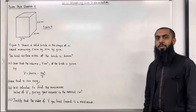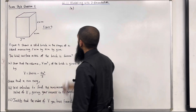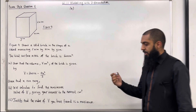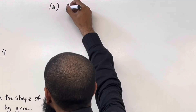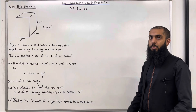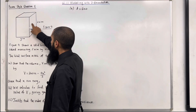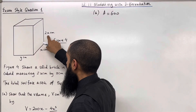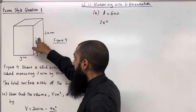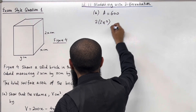Let's have a look at the solution to Part A. Firstly, we are told that the total surface area of the brick is 600 cm squared. So we can write down A equals 600 cm squared. Now I'm going to work out the surface area A. The area of this face over here is 2x times x, which is 2x squared. But we have two lots of this — the right-hand side and the left-hand side. So two lots of 2x squared, plus...